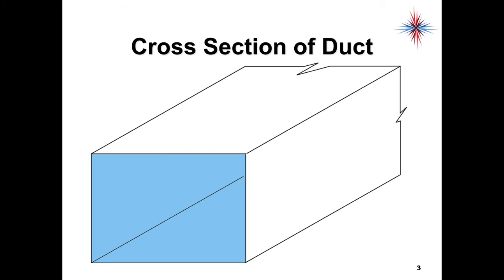When we take a look at a cross section of ductwork, you see this is a rectangular duct—could be sheet metal, could be fiberboard. The shaded blue area is the area that the air has to flow. The white lined area or the white line are the sides of the duct. This is the perimeter of the duct. They are not the same thing.